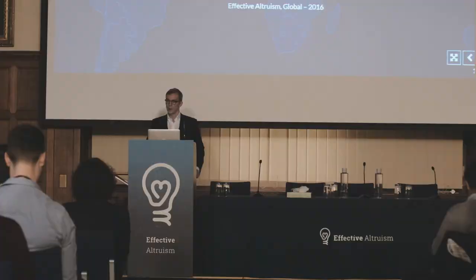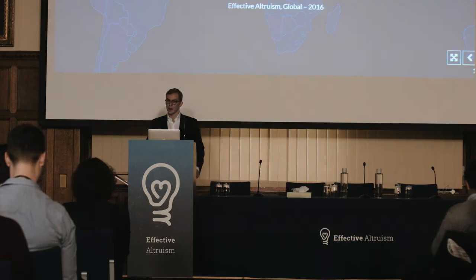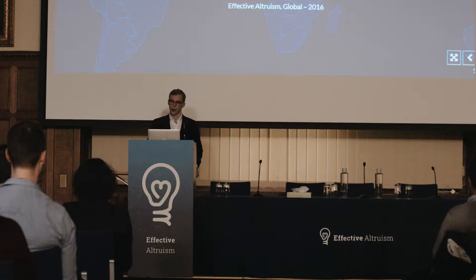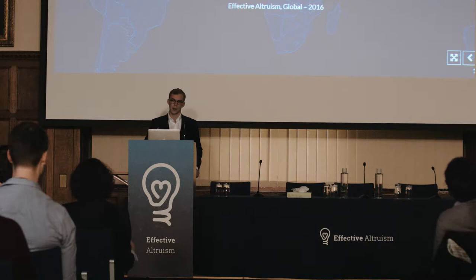We are going to begin by hearing from Max Rosser, who is going to give a talk on the big picture history of international development, both in the developed and the developing world over the last 200 years. The hope with the talk is that by realizing how radically living conditions have improved across the world, this might give us, as effective altruists, more optimism for the possibility of doing the same for parts of the developing world today.